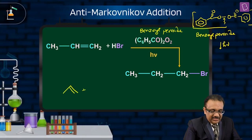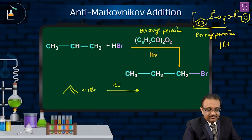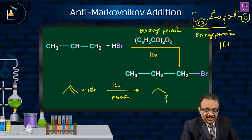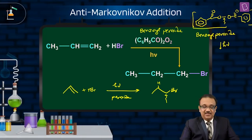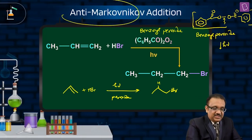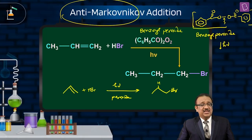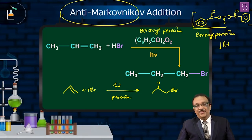Take benzoyl peroxide, give it a little ultraviolet light (hν), and in its presence react propene with HBR. You will see anti-Markovnikov addition: H, which should have joined here, joins there, and Br joins the other way. This is the fact — anti-Markovnikov addition happens in the presence of peroxide with HBR, and only HBR — not HCl — only HBR gives this peroxide effect.